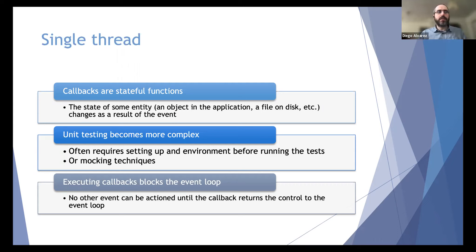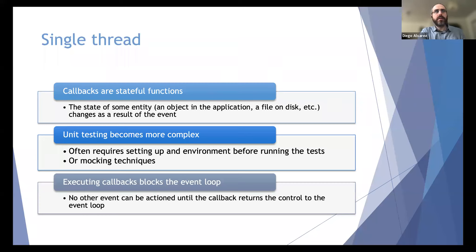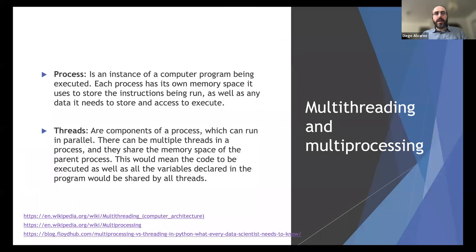Event-driven programming in a single-threaded case comes with these issues. The event loop is the core of the GUI — in desktop, web, and mobile applications. Every time there is a GUI, there is an event loop, sometimes called the main loop. Having this event loop makes testing more complex and assessing application state more complex. If working with a single thread, it also creates responsiveness issues for the user. This brings us to multi-threading and multi-processing.